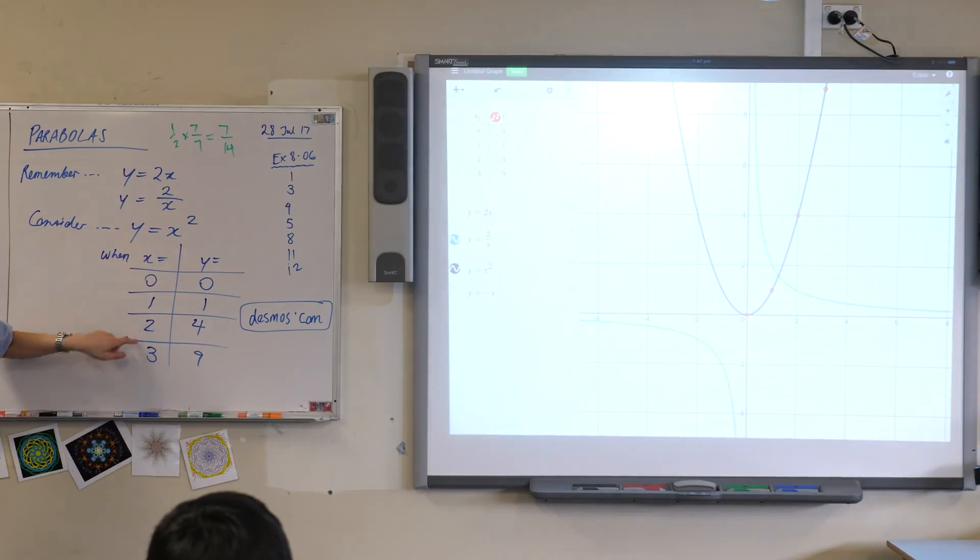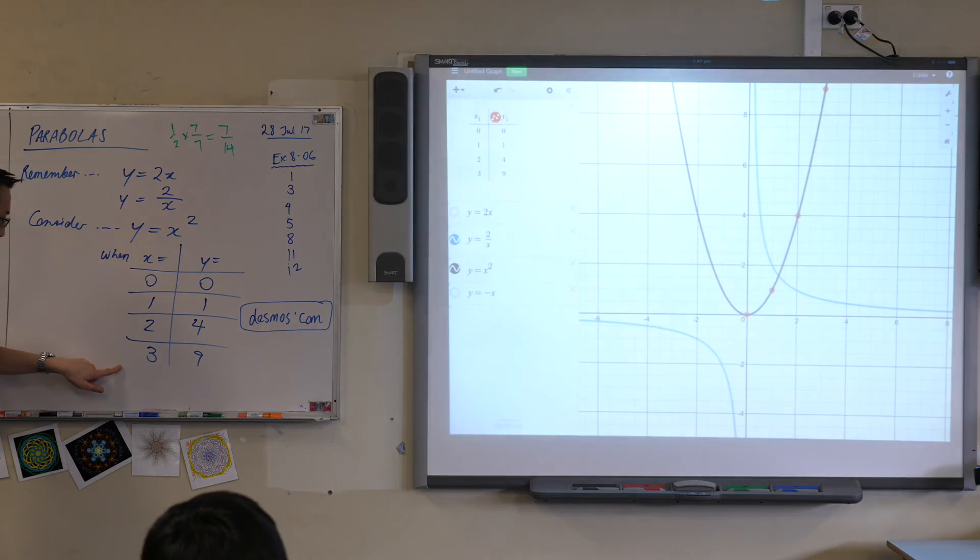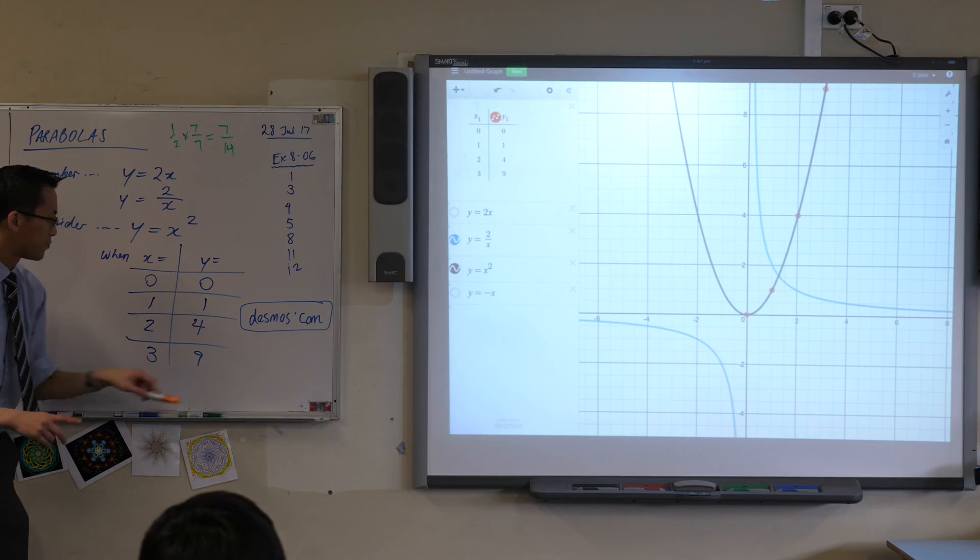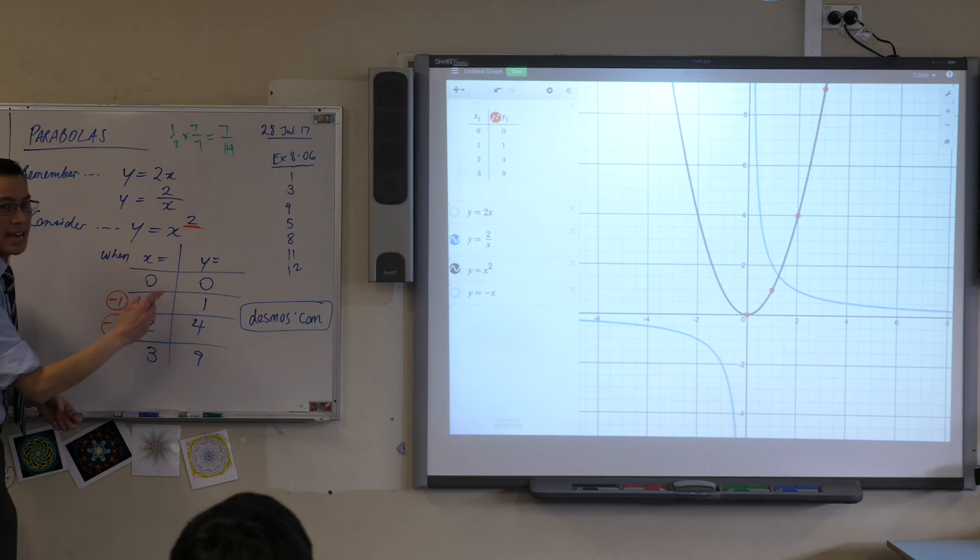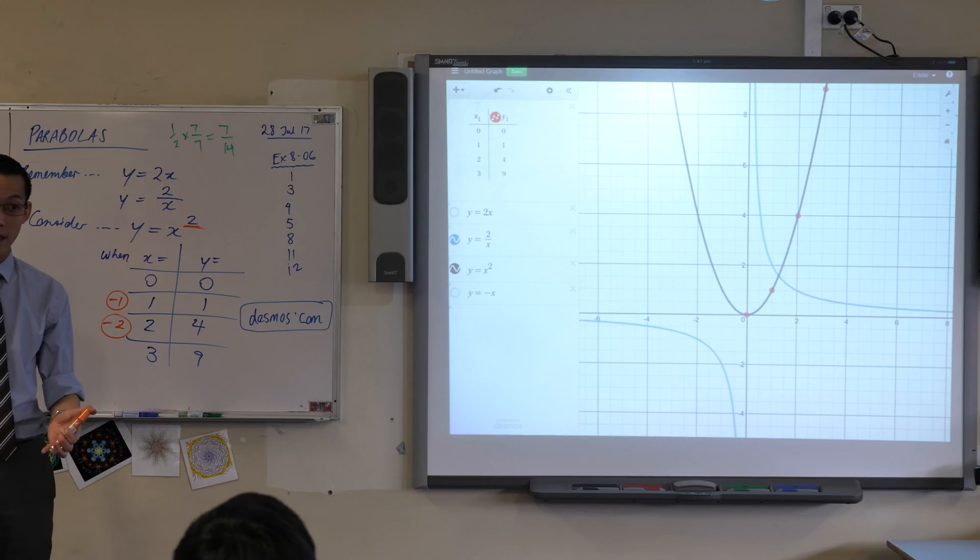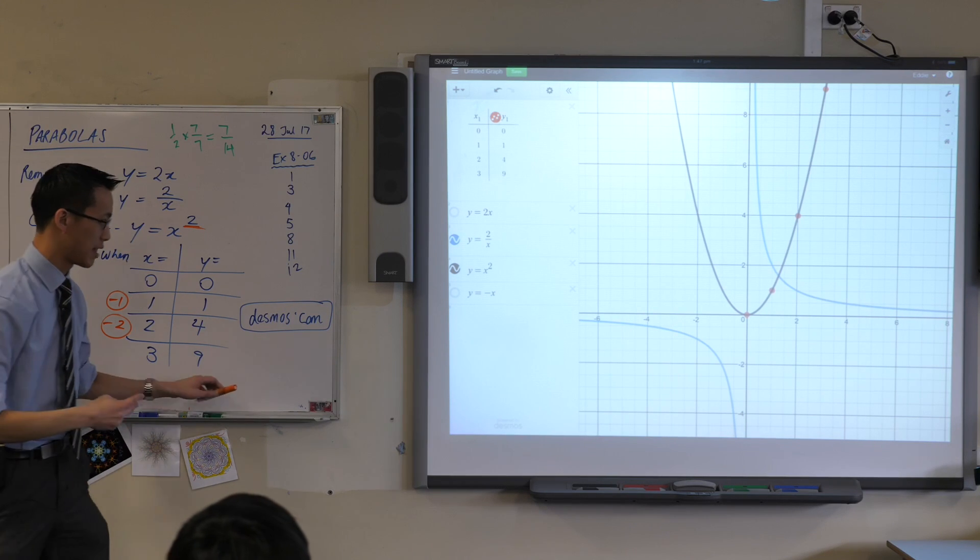We only did positive numbers. We only did positive numbers, right? But do you notice, if you had put in, say, negative one, instead of one, negative one. If x were negative one, what would y be equal to? It would still be one. If x were negative two, what would y be equal to? It would still be four. Why aren't there negatives there? Because it gets doubled. It gets squared, right? The number of negative signs doubles, and they cancel each other out.